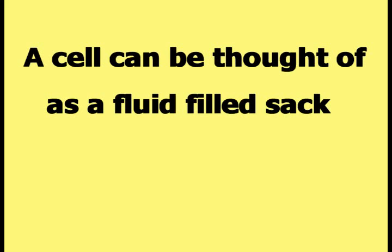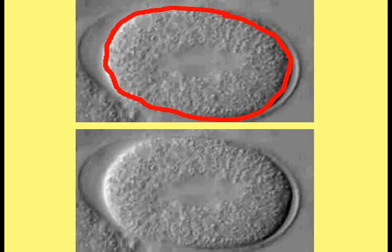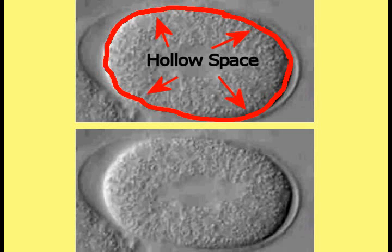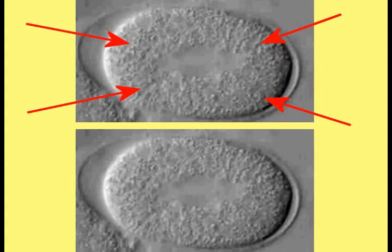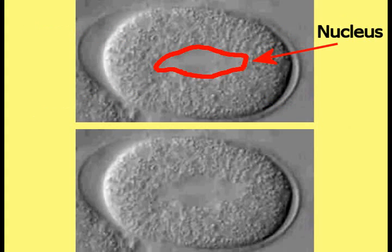A cell can be thought of as a fluid-filled sac. The outer covering of the cell completely encloses a hollow space in the center. The hollow space is filled with a fluid that has various things floating in it. The nucleus of the cell is one of the things floating in the fluid.